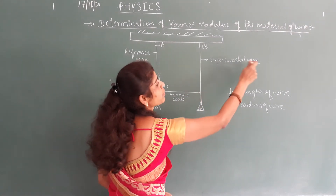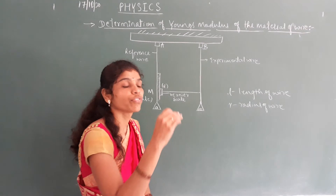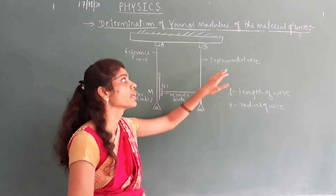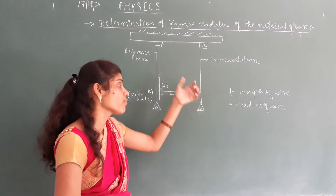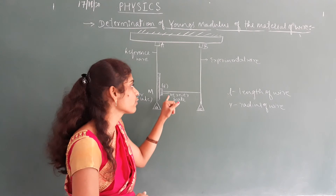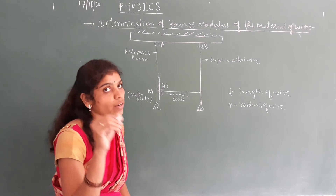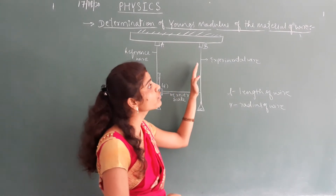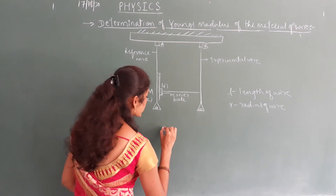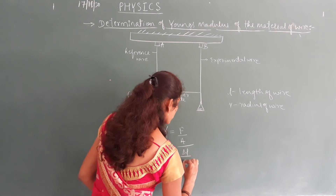The readings of the experimental wire are recorded using the vernier scale, and the difference of these vernier readings gives the elongation of the wire. Young's modulus of the material of the wire is calculated using the formula: Y equals force divided by area, multiplied by original length divided by change in length.